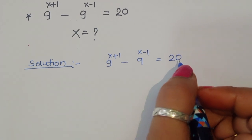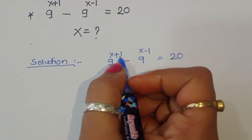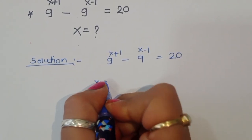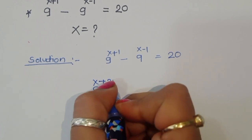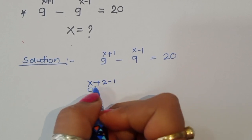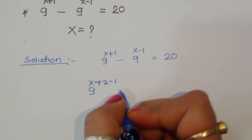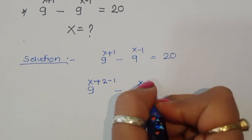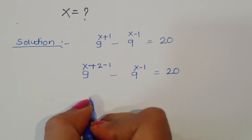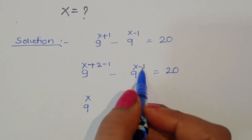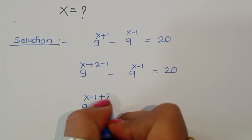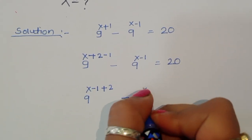Now, 9 power (x+1) — we can rewrite this plus 1 as (x-1+2), since 2 minus 1 equals plus 1. So we can write this in the form 9 power (x-1+2) minus 9 power (x-1) is equal to 20.